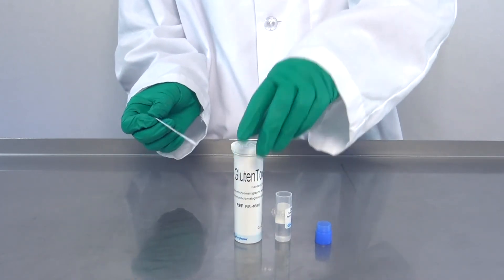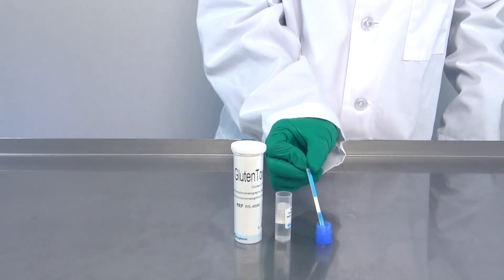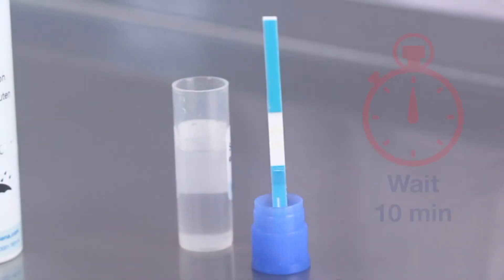Take a GlutenTox stick and place the cotton wool side of the stick into the blue cap until all the liquid is absorbed. Let it stand in the blue cap. Wait 10 minutes to see the final results.